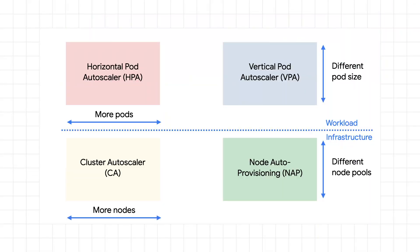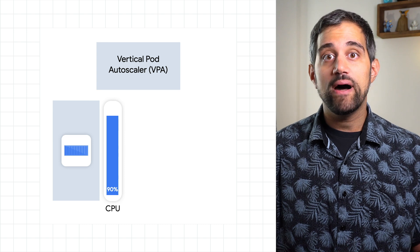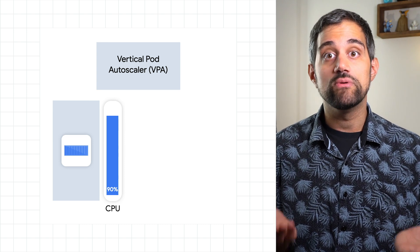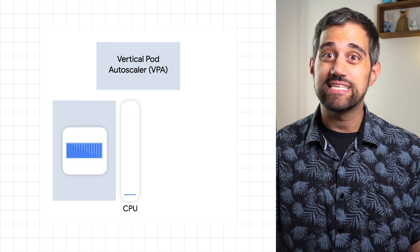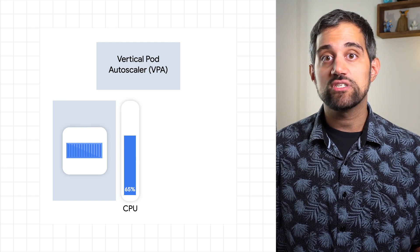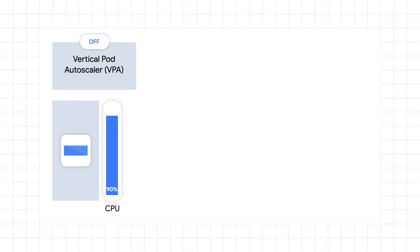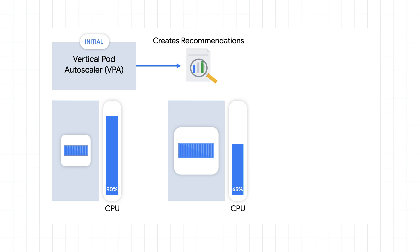So, that's horizontal pod autoscaling. Now let's look at vertical pod autoscaling. Rather than adding additional pod replicas, here the pods actually get recreated with more or less resources depending on CPU and memory usage. Remember that too few resources can overload your apps, and too many resources will mean that you're paying for things that you're not using. Vertical pod autoscaling works to solve this. It has three modes: off, initial, and auto. When it's off, no autoscaling actually happens, but the autoscaler is looking at your pods and creating recommendations based on usage that you can inspect. If it's set to initial, those recommendations will be used to create resized pods as they're needed, but it won't change the pod size afterward.